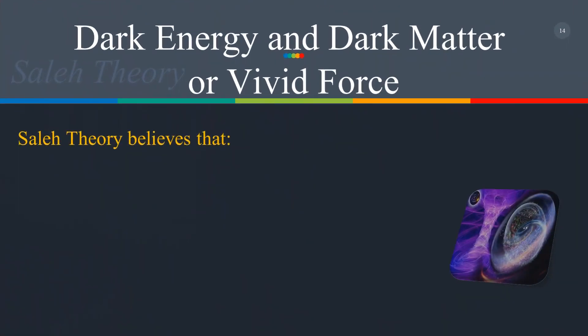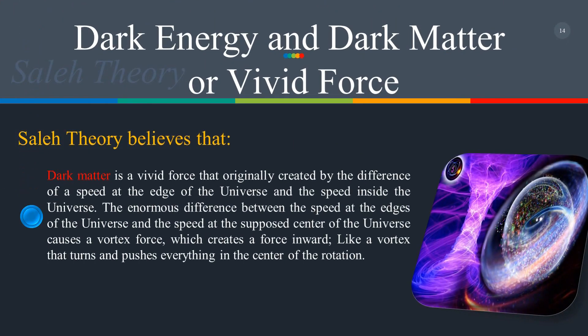Salih theory believes that dark matter is a vivid force originally created by the difference in speed at the edge of the universe and the speed inside the universe. The enormous difference between the speed at the edges and the speed at the supposed center of the universe causes a vortex force — a force that turns and pushes everything toward the center of the rotation.